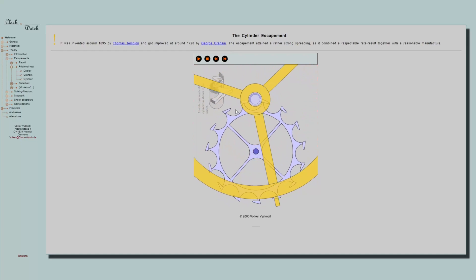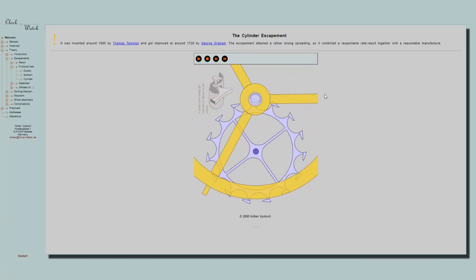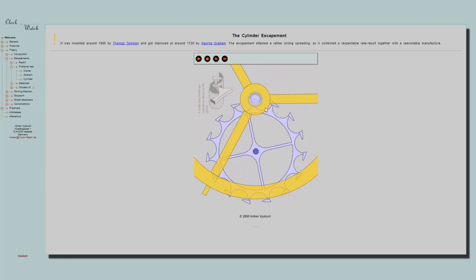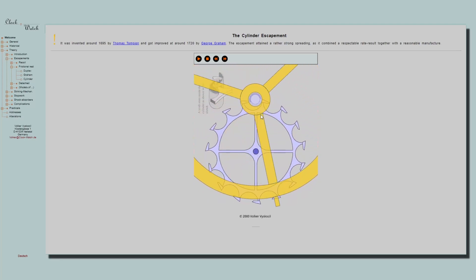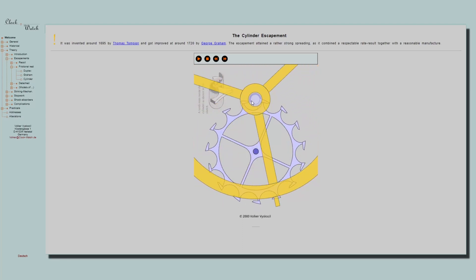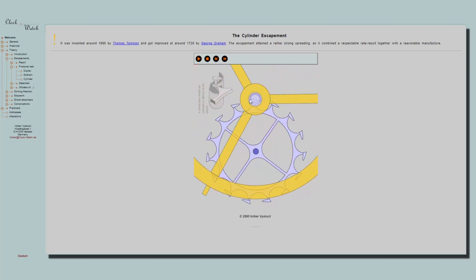So here we are on the clockwatch website. It is a really good website if you want to take a look at how all those escapements work. This website needs a Flash plugin to run. I will put it in the description together with that plugin. So here we can see what I couldn't show earlier in the movement itself. The blue part here is the part of the cylinder that isn't cut out, and the rest is what is cut out.